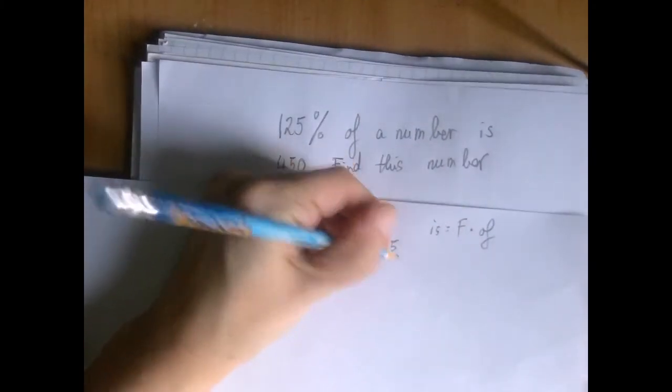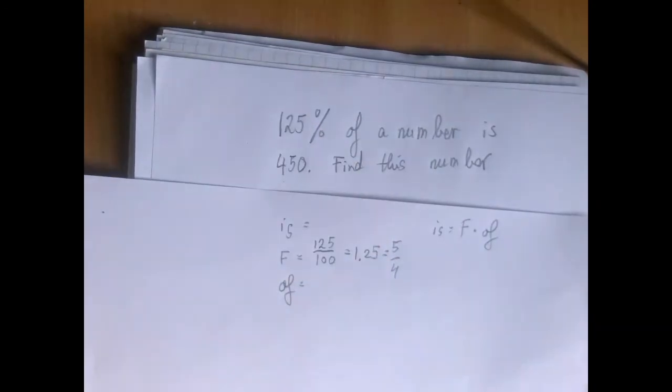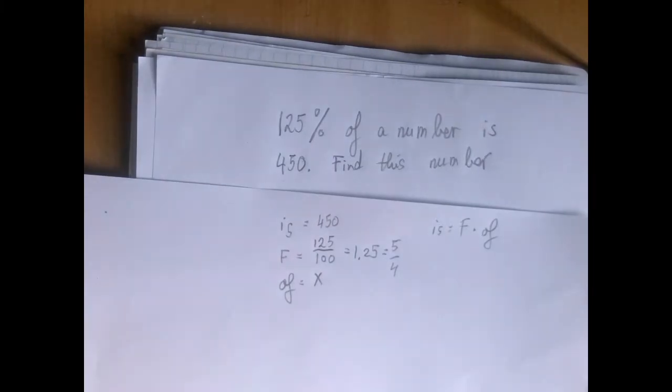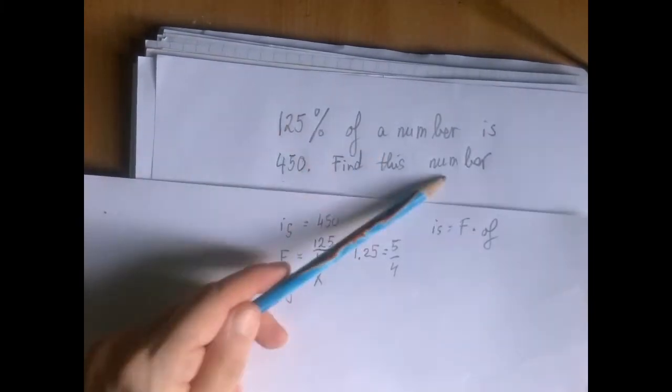So we don't really know yet which form is going to be the best for us. So the is number is 450. And then, of course, the of number is the unknown. Of a number, find that number.